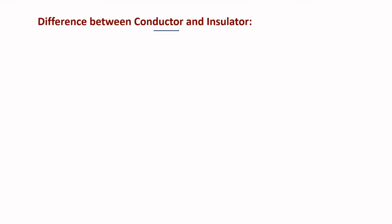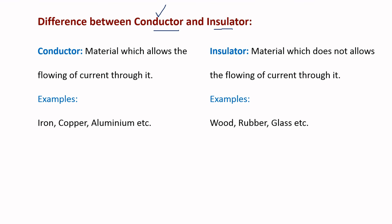The next difference is between conductor and insulator. These are two materials that differ in their properties. A conductor is a material which allows the flowing of current, while an insulator is exactly the reverse — it is a material which does not allow the flowing of current.